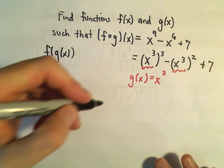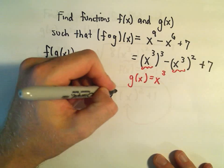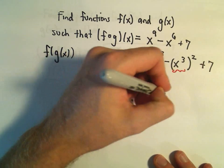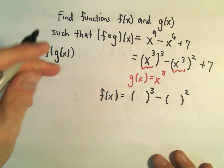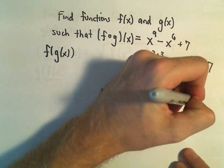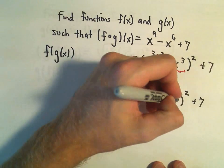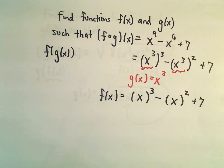And what are we doing to that x³? Well, we're taking that and cubing it. And then we're taking that and subtracting away the square of it. And then we're adding 7. So I think if we let f(x) equal x³ - x² + 7, those would be two functions that work.